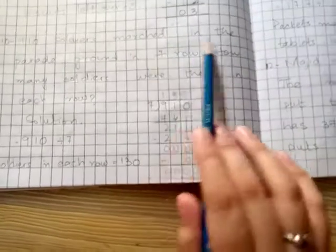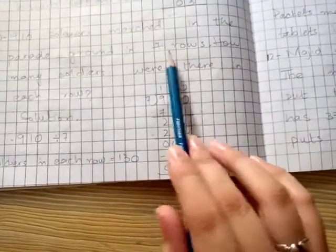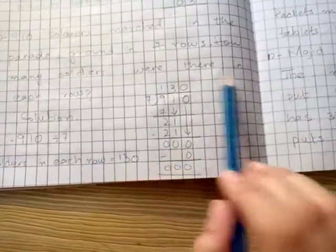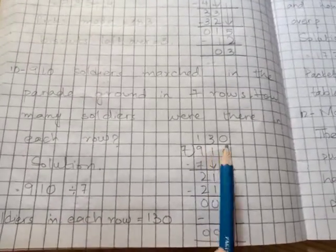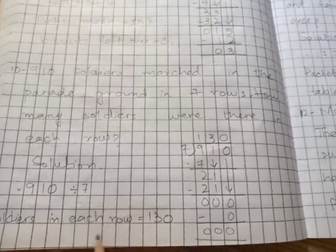910 soldiers marched in a parade ground in seven rows. How many soldiers were there in each row? Thik hai, 910 divided by 7 karenge, aapke answer a jaega 130 soldiers were in each row. Thik hai, kyunke iske koi remainder nahi aur nene kuch remaining nahi kuchha.